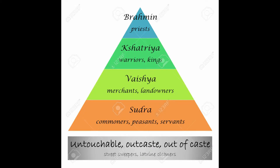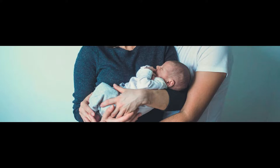So the four main castes were Brahmins, Kshatriyas, Vaishyas, and Shudras. These castes were further divided into 3,000 more castes and 25,000 sub-castes, each based on their occupation. The caste system was also determined by birth. A Brahmin could not become a Vaishya, and neither could a Shudra become a Brahmin.